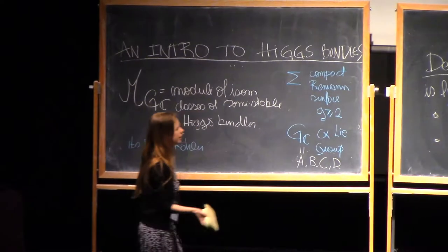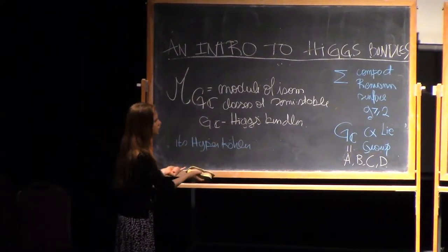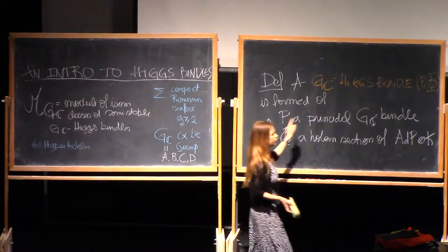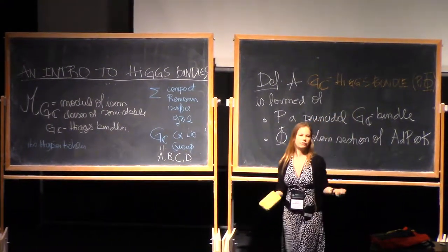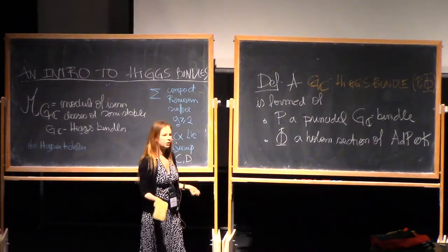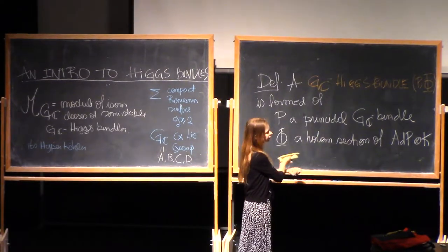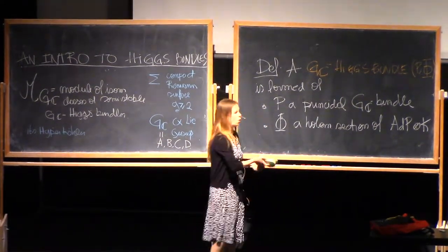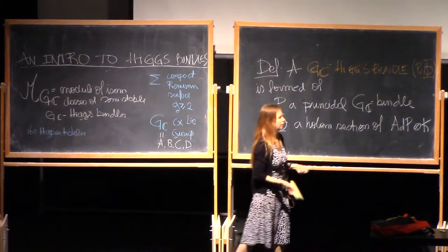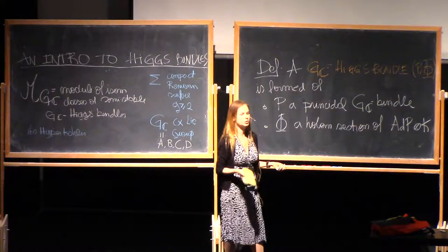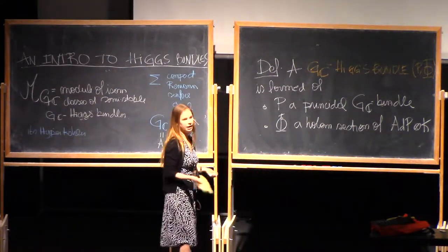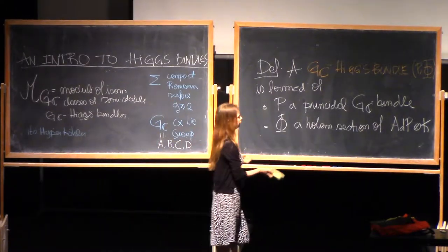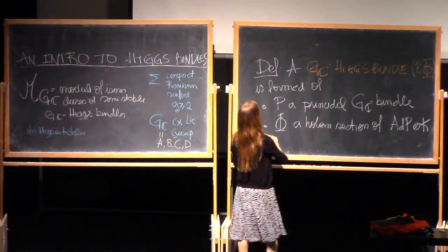We can carry on defining more generalizations of Higgs bundles. You can look at real groups — at the end of the lecture, we'll take a real group and put the same idea into a real form of a complex Lie group. You can put marked points and define Higgs bundles with structure on those marked points, that's parabolic structure with filtrations of the bundle and weights for that filtration satisfying stability conditions, giving a moduli space of Higgs bundles over manifolds with marked points. You can also drop holomorphicity and allow Higgs bundles to have poles over certain marked points, giving wild Higgs bundles or tame Higgs bundles. These generalizations carry a lot of interesting information.